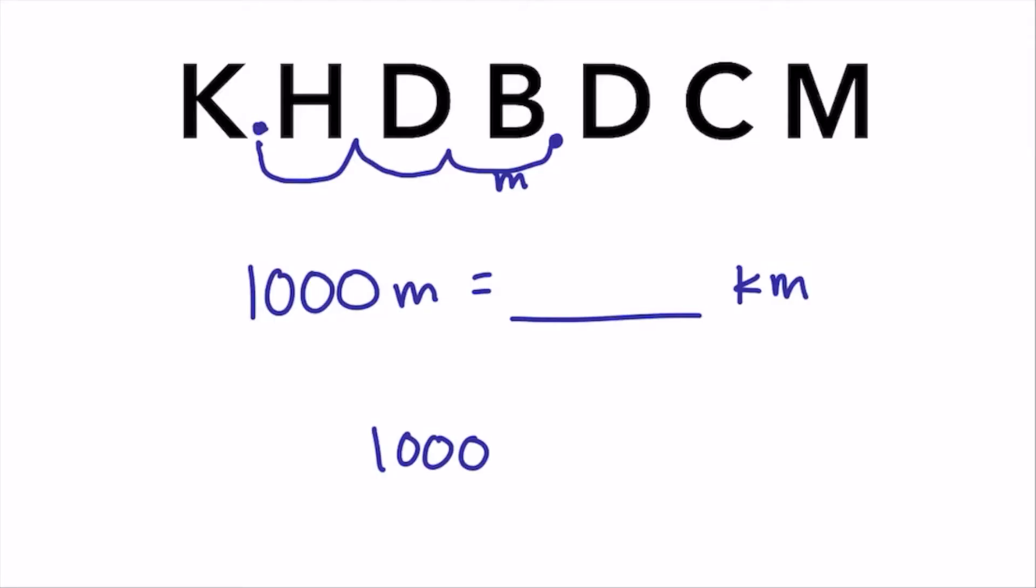three spaces to the left to get to kilometers. If there's no decimal in the given quantity, you can just put a decimal directly after the ones place. So we move 1, 2, 3 spaces to the left. And our final answer is 1.000 kilometers. And in our final answer, you don't have to include all of those extra zeros necessarily. Our final answer is 1 kilometer.